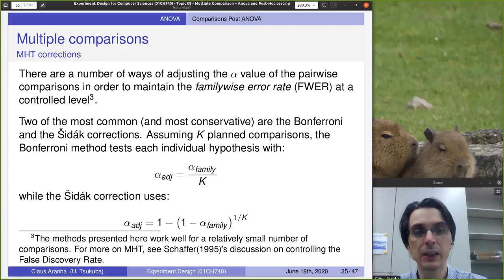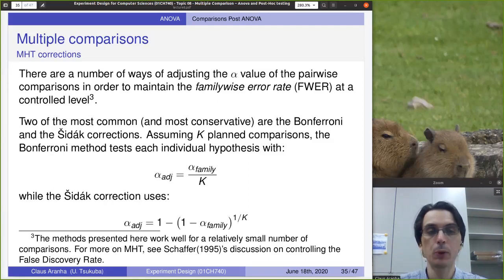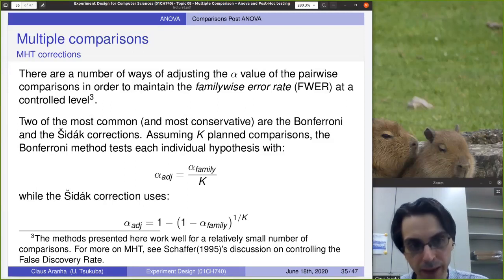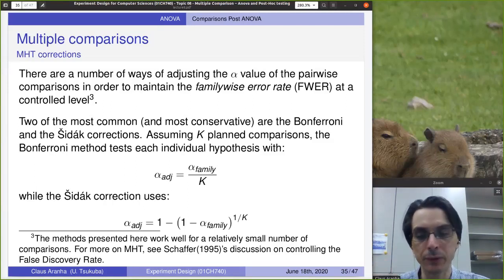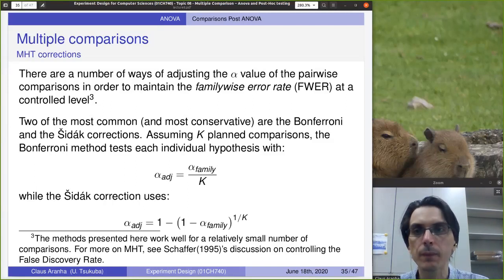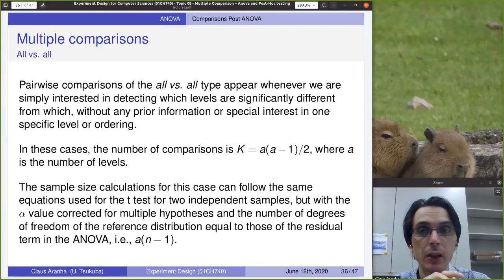There are other methods as well. These two are very conservative, meaning they protect the most against Type I errors at the expense of being slightly less powerful — having a higher probability of Type II errors. So let's look at the types of comparisons. We can do all-versus-all comparisons: A versus B, A versus C, A versus D, B versus C, B versus D, and C versus D.